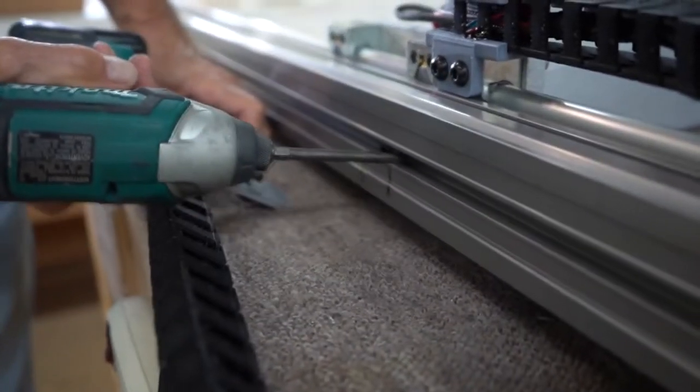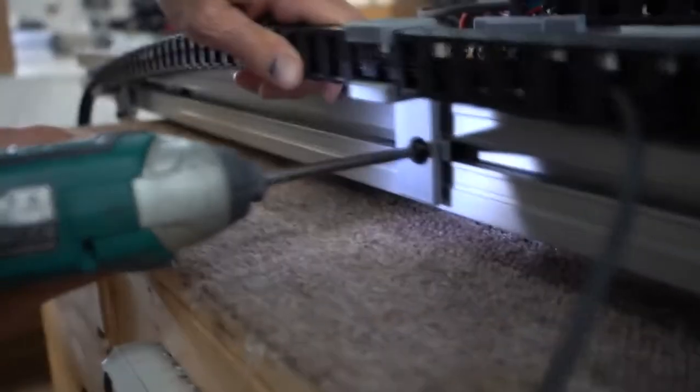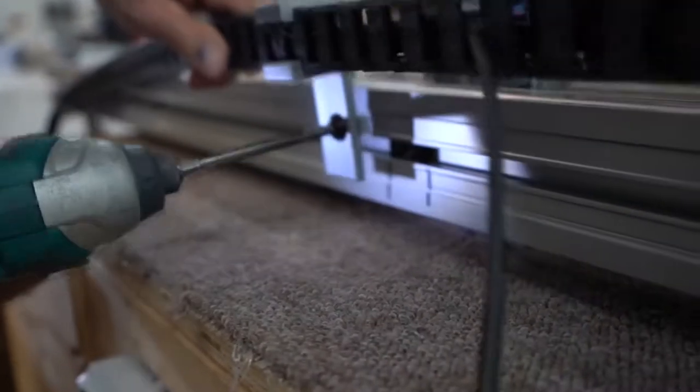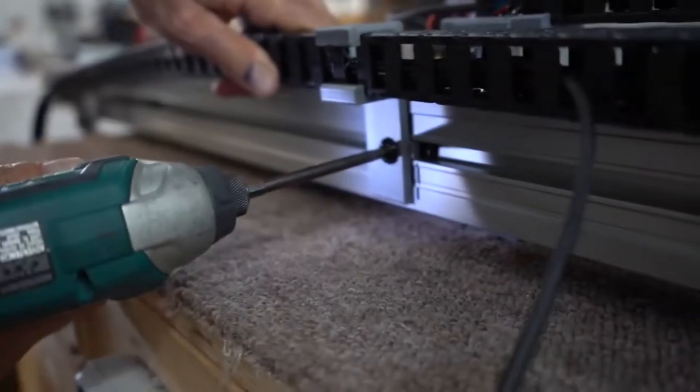Secure the top part of the chain to the back side of the rail at the indicated marks. If this part is over-tightened, the plastic will crack. Please be gentle.